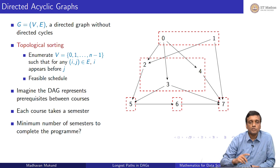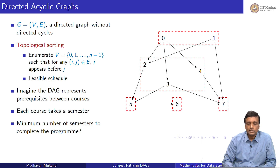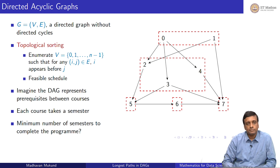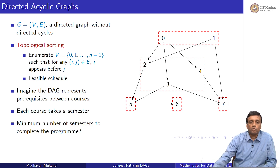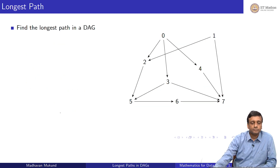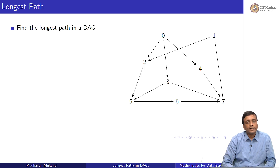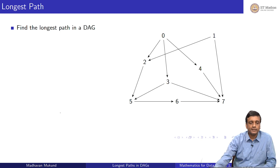So if this DAG represents my prerequisites, then I cannot do better than a sequence of 5 semesters. This is the problem that we want to compute, and formally it consists of finding the longest path in a DAG.